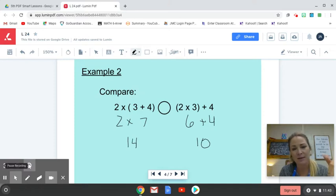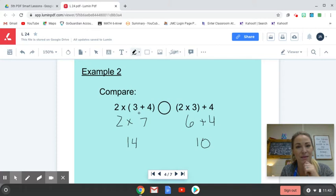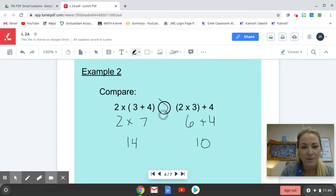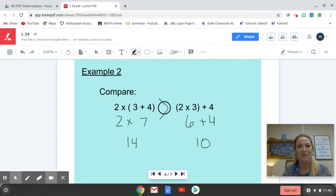All right, so you can see here that I've worked out these expressions to come to an answer at the end. From this one, again, super important that I do the work within parentheses first. So when I do that, 3 plus 4 gives me 7. I can bring my 2 straight down, and I end up with 2 times 7 is 14 on this side on the left. When I do the work on the right, I do the work within parentheses first again, and I get 2 times 3 is 6, and I just drop down my 4. 6 plus 4 is 10. So when I have those two answers at the end, I end up with 14 compared to 10. And then, of course, 14 is greater than 10. Our answer is greater than.